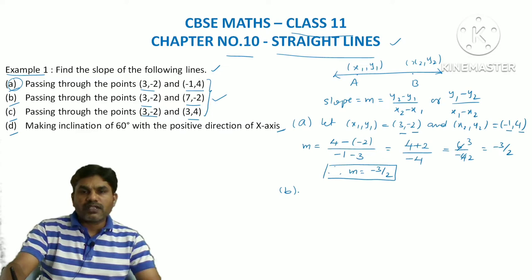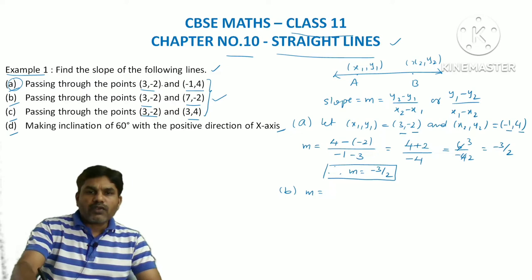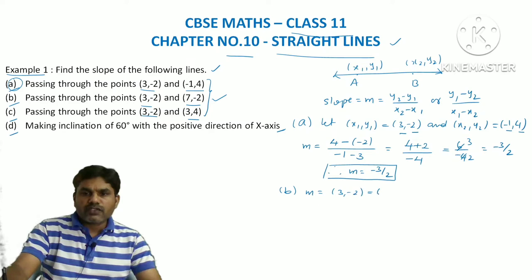Coming to part (b), it is also of the same type but you will get a different answer. Here again take x1, y1 = (3, -2) and x2, y2 = (7, -2). Now we apply the slope formula m = (y2 - y1) / (x2 - x1).